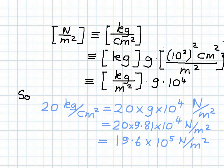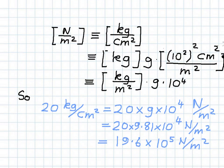We write the meter squared which we require, and the cm squared on the top. To get the same correspondence, the cm squared has to be multiplied by 100 squared. Our final conversion factor then amounts to: kilograms per cm squared must be multiplied by G and 10 to the power 4.